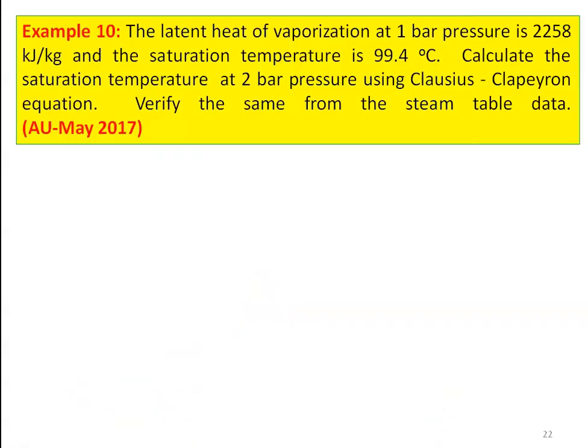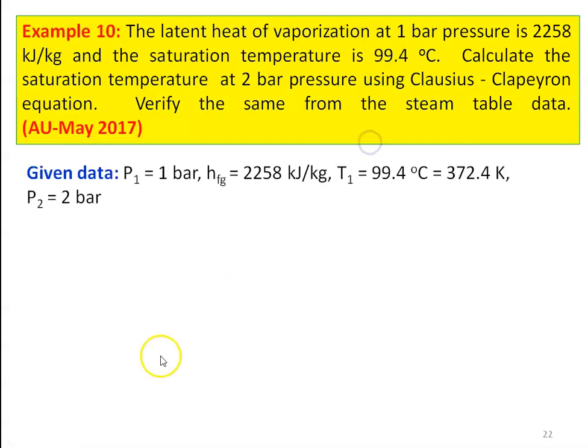We take the 10th example from the university question paper May 2017. The latent heat of vaporization at 1 bar pressure is 2258 kilo joules per kilogram. The saturation temperature is 99.4 degree Celsius. Calculate the saturation temperature at 2 bar pressure using the Clausius-Clapeyron equation. Verify the same from the steam table data. Given data: pressure P1 equal to 1 bar, h_fg equal to 2258 kilo joules per kilogram, temperature T1 equal to 99.4 degree Celsius which is 372.4 Kelvin, and pressure P2 equal to 2 bar.